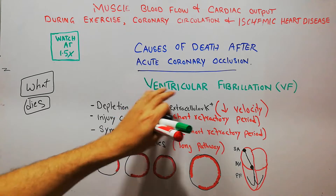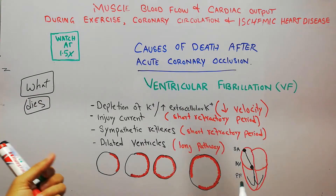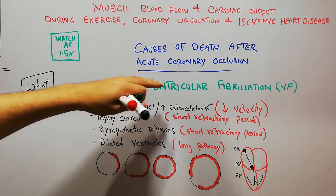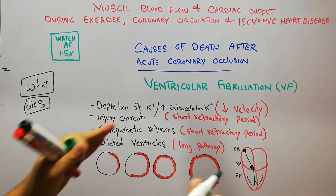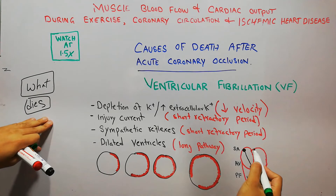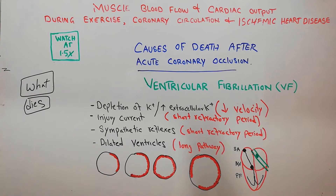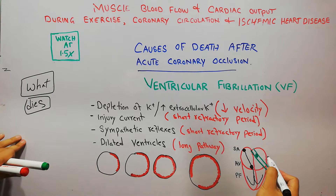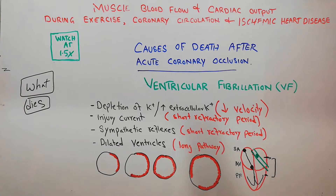In ventricular fibrillation, there is damage to some portion of the heart. Here we are discussing VF due to acute coronary occlusion. For example, the coronary vessel has been occluded, blood flow to that portion of the heart has been stopped, and that area has been damaged.